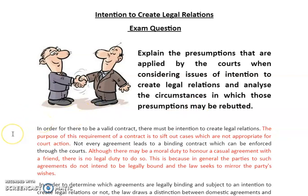This answer starts with: in order for there to be a valid contract, there must be intention to create legal relations. The purpose of this requirement is to sift out cases which are not appropriate for court action, because not every agreement you make in day-to-day life leads to a binding contract enforceable through the courts. For example, you might have an agreement to meet a friend at the park — you might have a moral duty to honour that agreement, but not a legal one. The law seeks to mirror the parties' wishes.